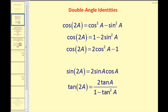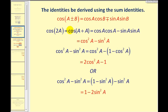Let's take a quick look at how these can be verified. If we take the sum identity for cosine and use cosine of A plus A instead of A plus B, we can see how cosine two A equals cosine squared A minus sine squared A. Taking cosine squared A minus sine squared A, we can replace sine squared A with one minus cosine squared A to obtain two cosine squared A minus one. Or if we replace cosine squared A with one minus sine squared A, we obtain one minus two sine squared A.